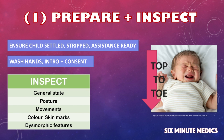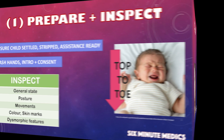Firstly, have a look at the baby from the end of the bed. What is their general posture like and what movements are they demonstrating? Have a look at their colour — are they obviously jaundiced or pale looking? And have a look to see if there are any obvious skin marks, rashes, or any obvious dysmorphic features.